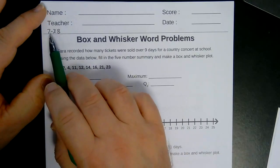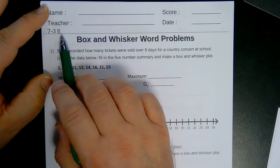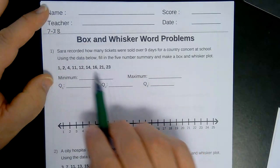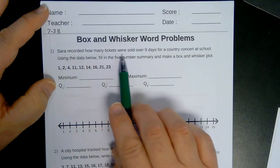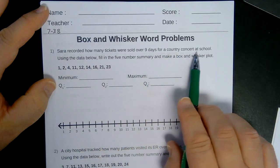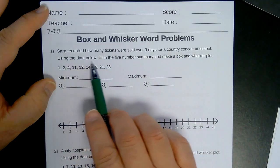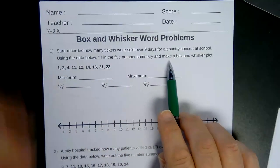Alright, the next one. This is Unit 7, Section 3, the second handout of Section 3. It uses word problems now. Sara recorded how many tickets were sold over 9 days for a country concert at school. Use the data below, fill in the 5-number summary and make a box plot.